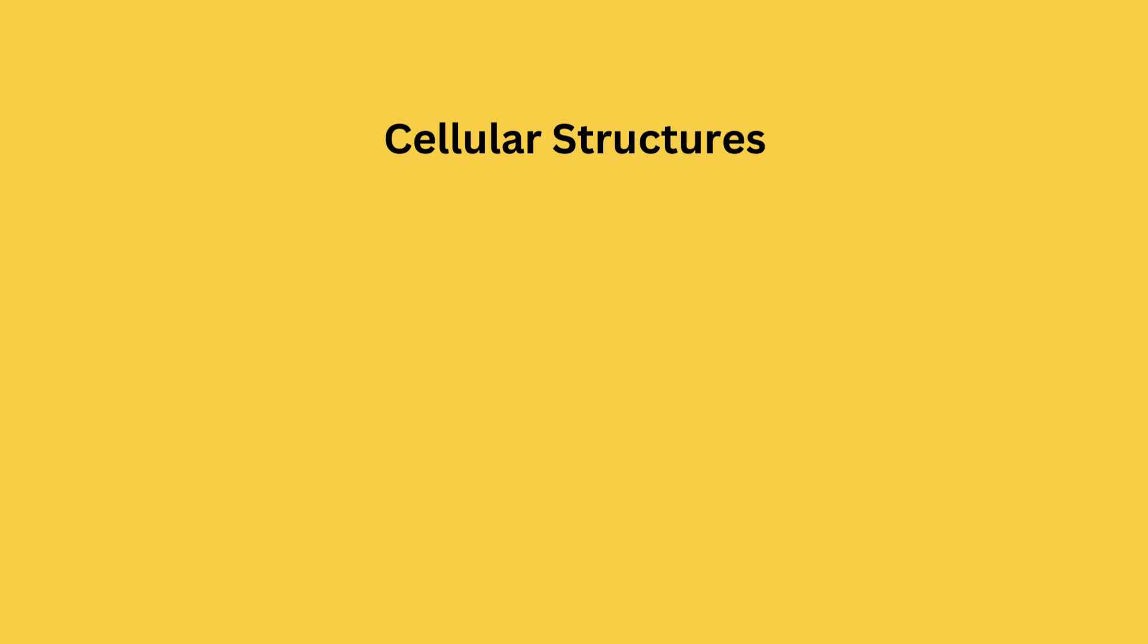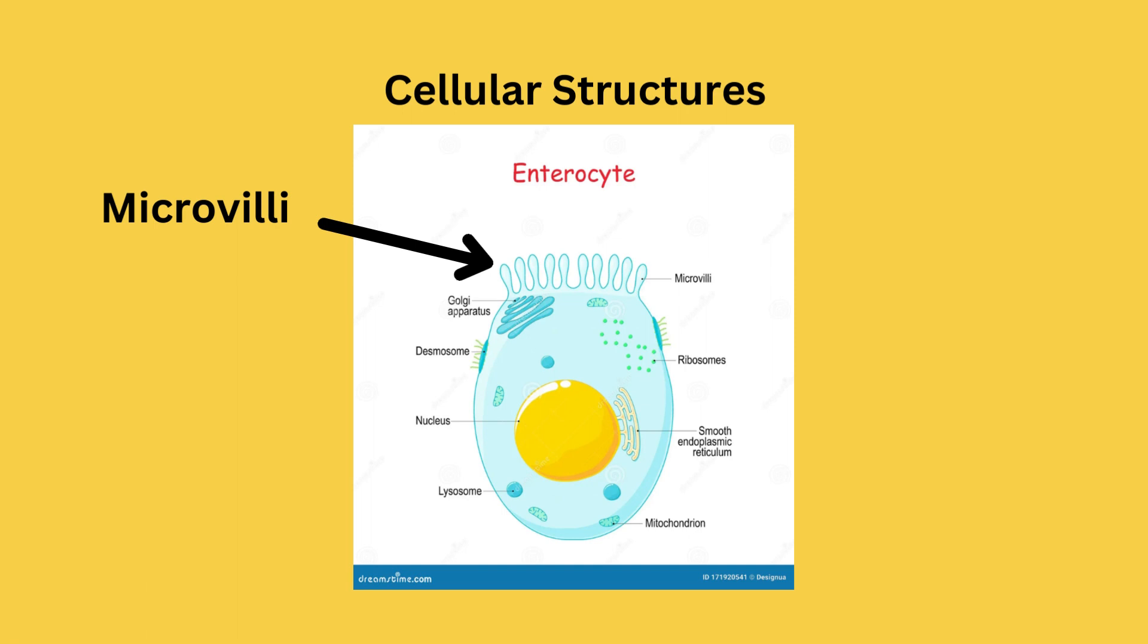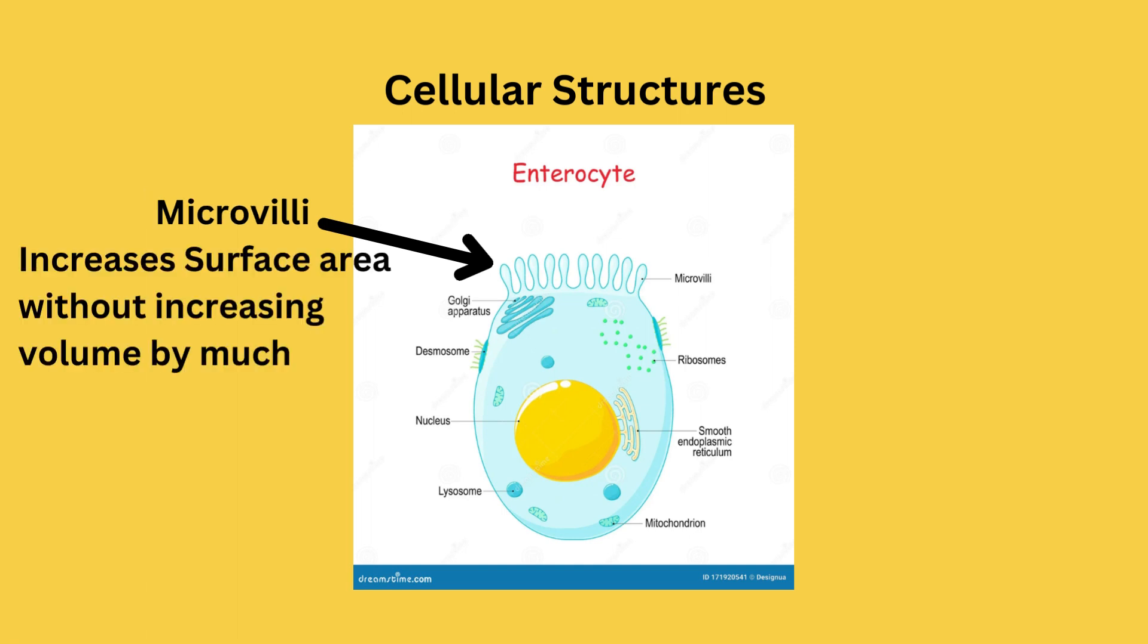In order for the surface area to compensate for a large volume, cellular structures such as microvilli can form in order for an increased surface area without an increased volume.